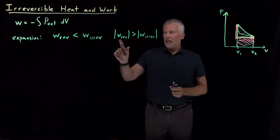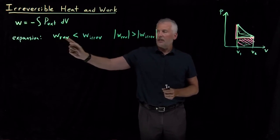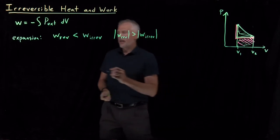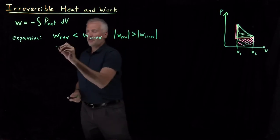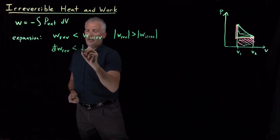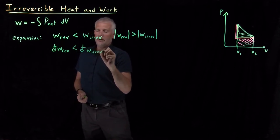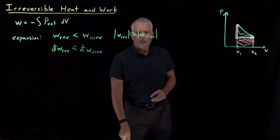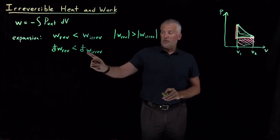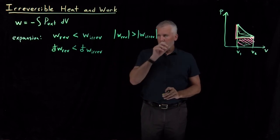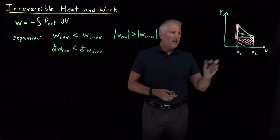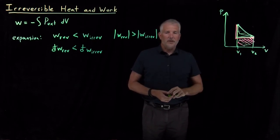Because those values are negative, the larger negative number is smaller than the smaller negative number. Another way to think about that: even for an infinitesimally small change, the tiny amount of work done for a reversible process is smaller — meaning more negative — than the amount of work done for an irreversible process. So that all holds true for an expansion. The easiest way to think about it is with these graphical curves and the area under the curve with a negative sign in front of it.